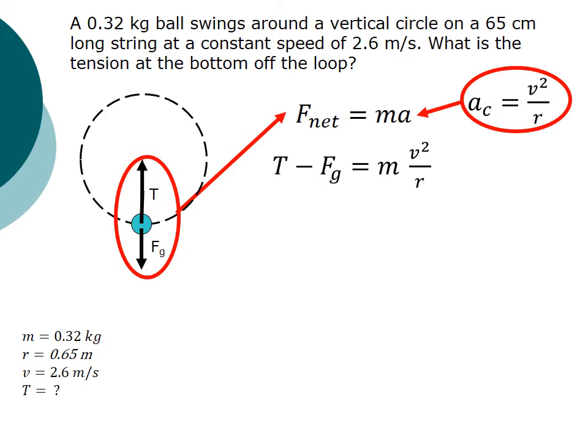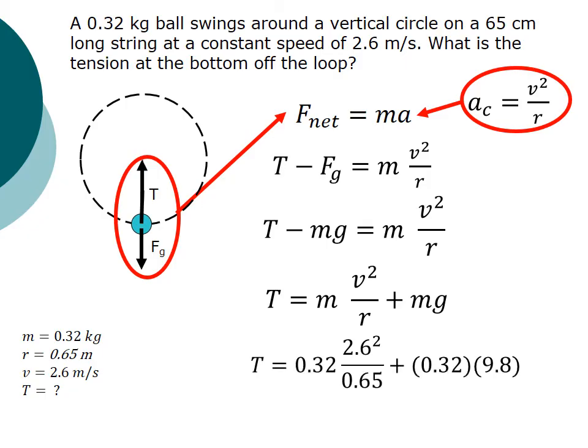Now, at this point, I think I've got most everything. If I replace force of gravity with mg, I've got m, I've got r, I've got v. I got everything. Now I can just do some algebra, rearrange, solve, plug, chug. There we go. We got a tension of apparently 6.5 newtons.